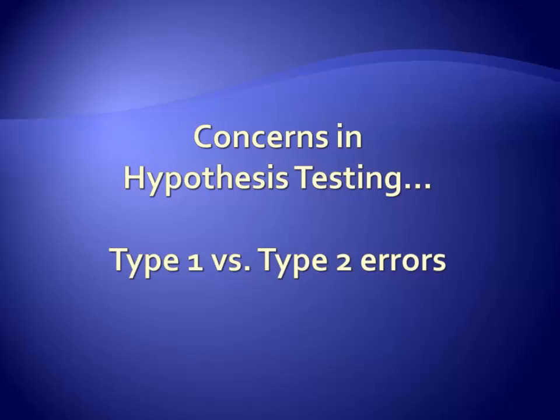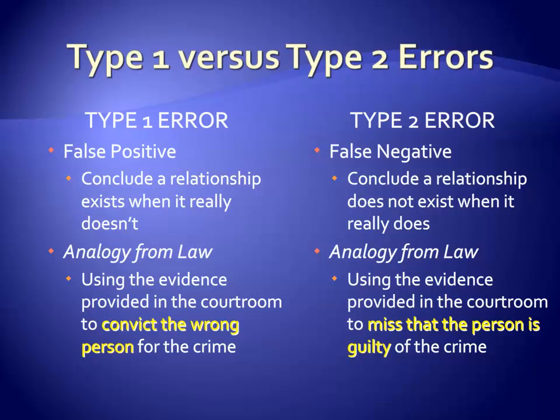The second concern with hypothesis testing relates to type 1 and type 2 errors, also known as false positives and false negatives. The positive in this statement means concluding that a relationship is present, whereas the negative relates to concluding that a relationship is absent. Therefore, a false positive means that we are falsely stating that a relationship is present, whereas a false negative means that we are falsely stating that a relationship is absent.